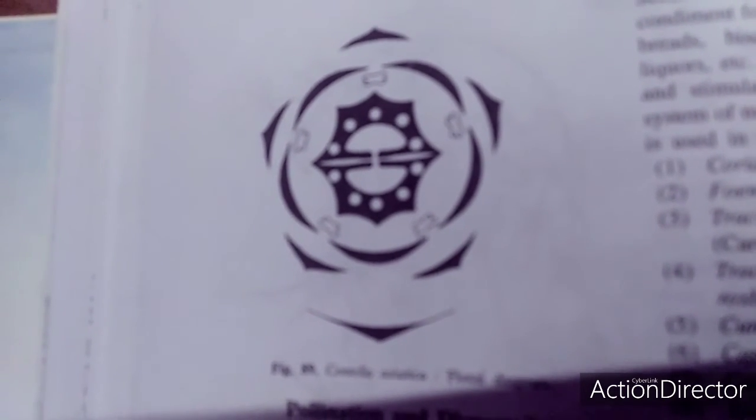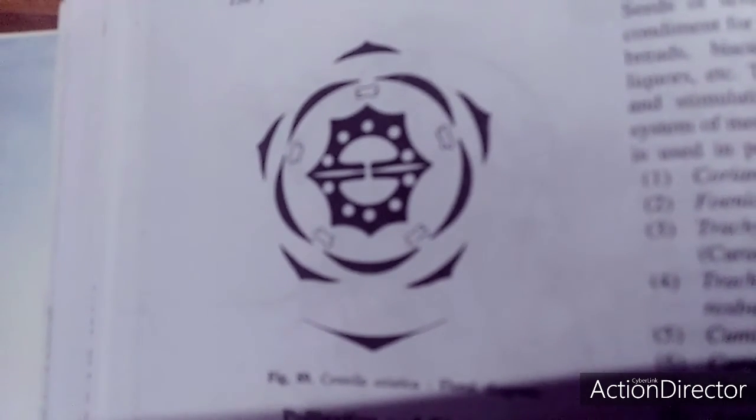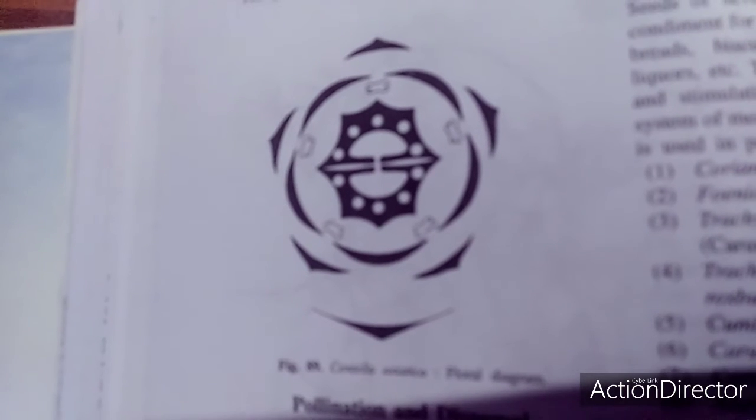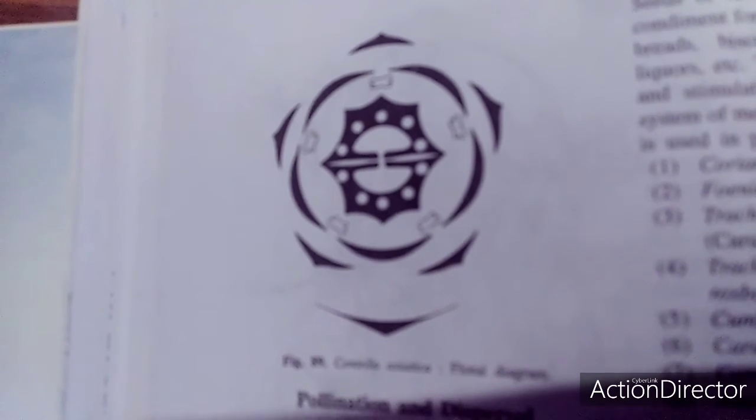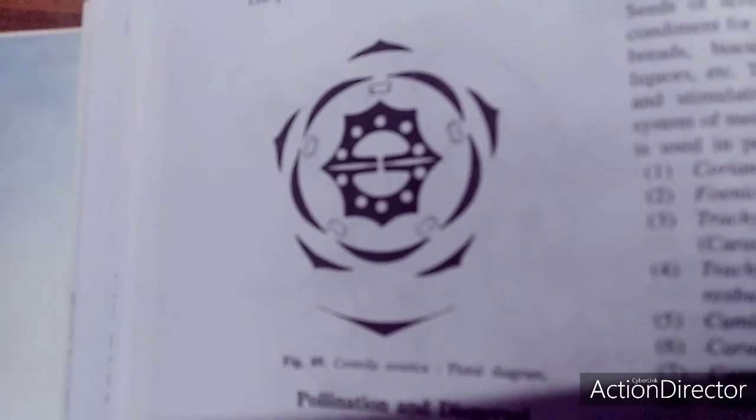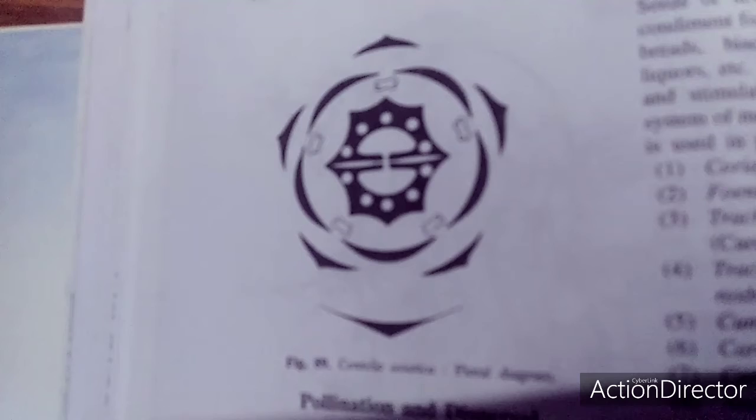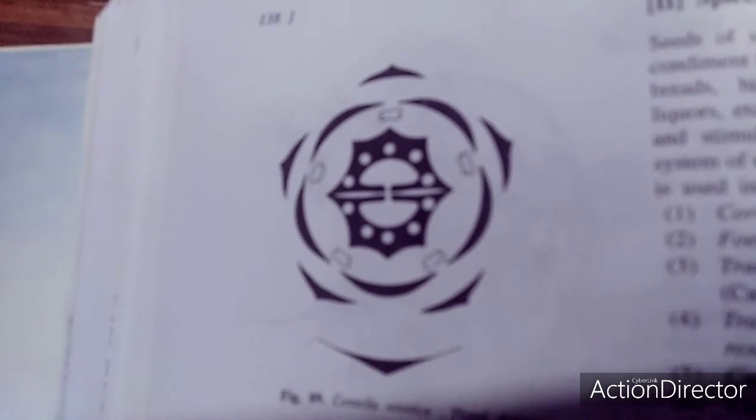The flowers are subtended at the base by involucres of bracts. Complete flower is present—bisexual, actinomorphic, epigynous condition has been recognized. The calyx has five lobes, adherent to the ovary, valvate condition is there, and gamosepalous condition has been recognized.